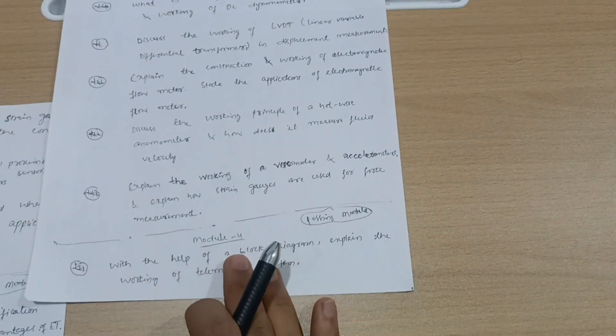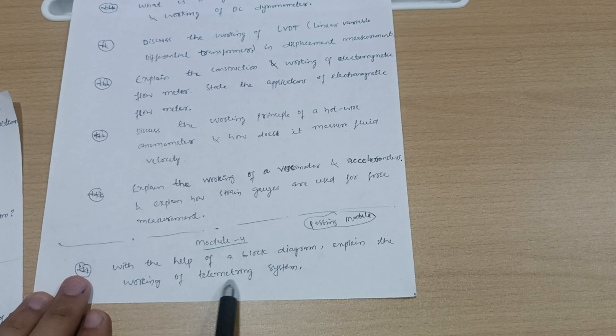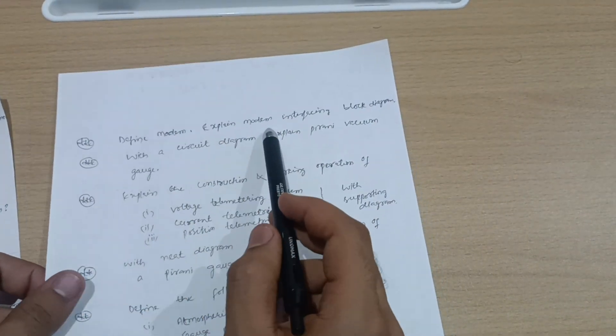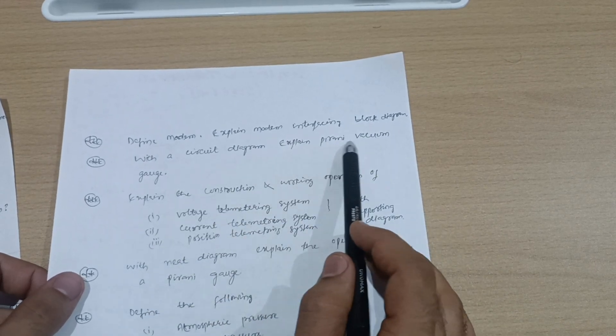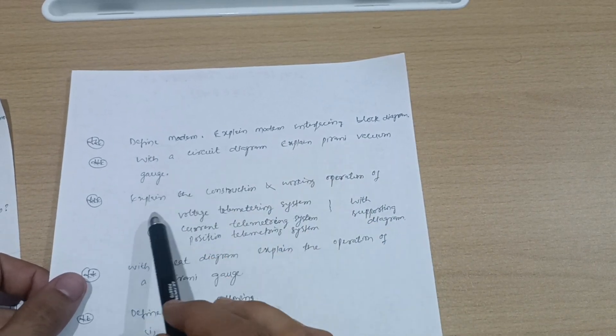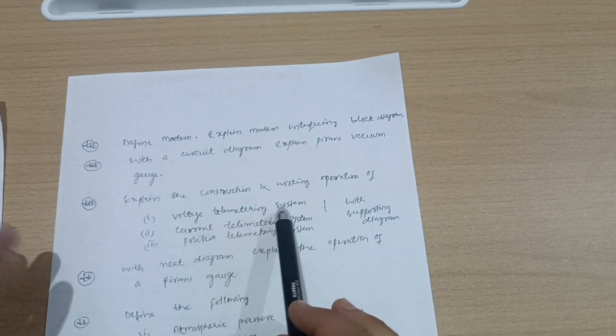Now let me discuss another passing module, Module 4, in which you have to cover: With the help of a block diagram explain the working of a telemetric system. Define modem, explain modem interfacing block diagram. With a circuit diagram explain Pirani vacuum gauge and explain the construction and working of voltage telemetric system, current telemetric system and position telemetric system.